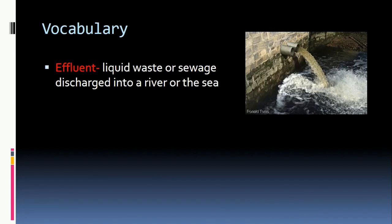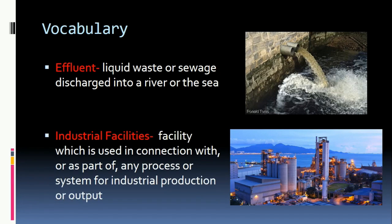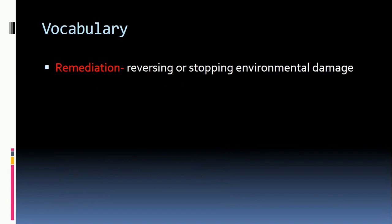Effluent is a specific type of point source pollution. It is liquid waste or sewage discharged into a body of water or river. Industrial facilities, such as the one pictured here, have industrial production and usually emit effluent. Remediation is reversing or stopping environmental damage, such as reducing effluent from industrial facilities.